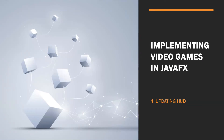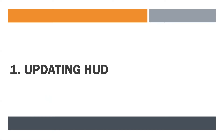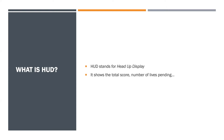In this fourth video we are going to see how to update players information as we play the video game, which is commonly called HUD. HUD stands for Head-Up Display and it refers to every piece of information that we can see in the game screen referring to the current state of the main player or the video game itself.